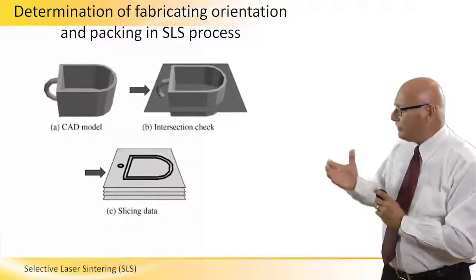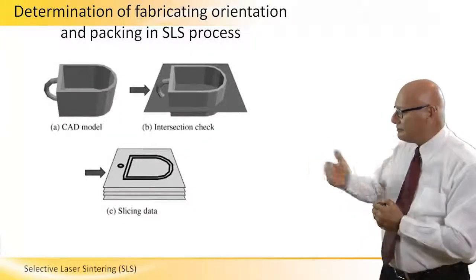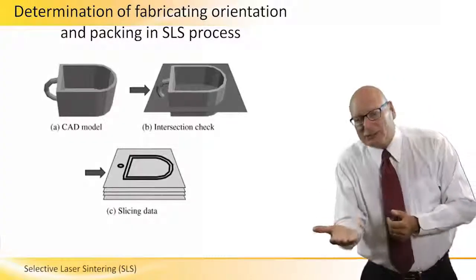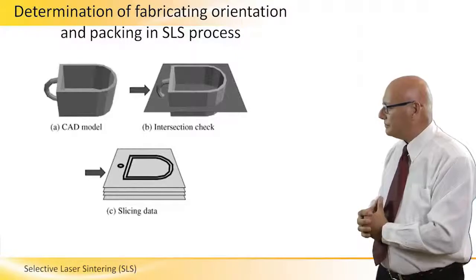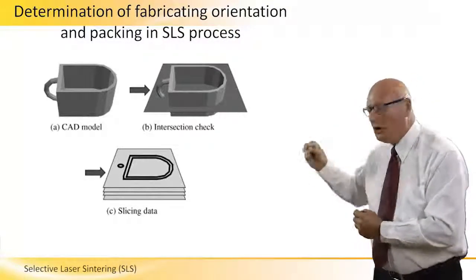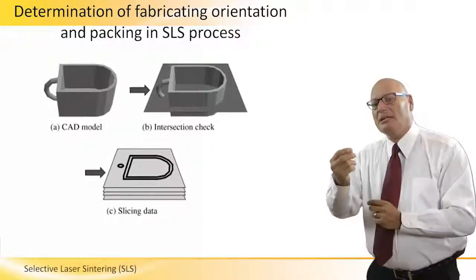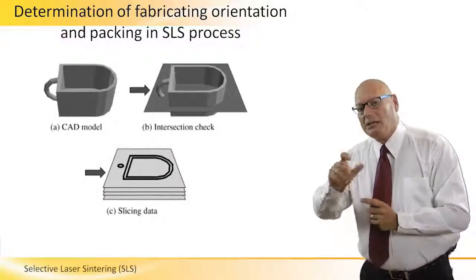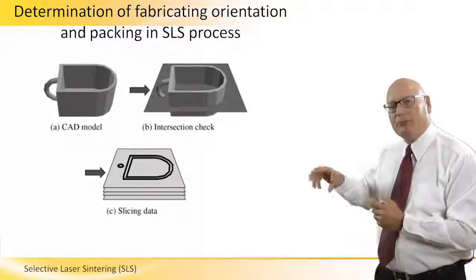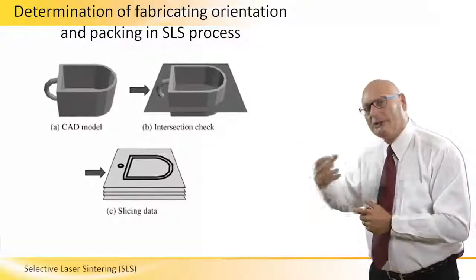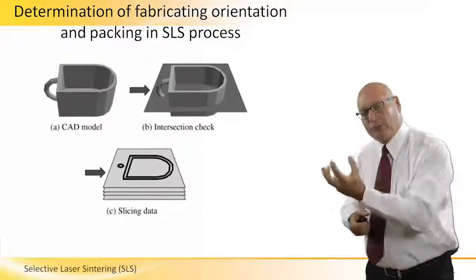To summarize orientation: we start with the CAD model, do an intersection check, then slice it — always starting from the cover to the walls. Orientation is very important and I keep emphasizing it because costs can be tremendously higher if we make a mistake. In this particular example there is no need for any support, but if we make a mistake in orientation, the support material will far exceed the walls of the cup in quantity, the process will be much longer, and the prototype will cost much more.